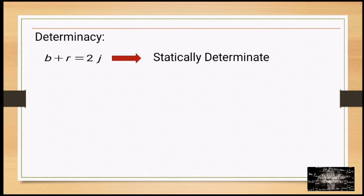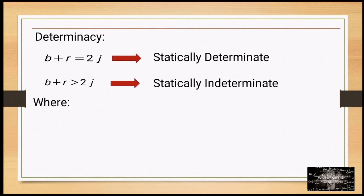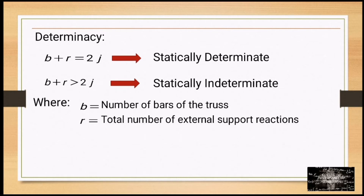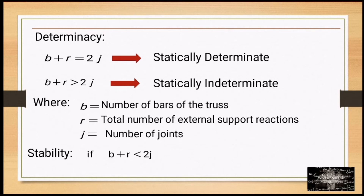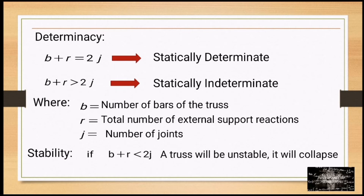The structure is statically determinate when b plus r equals 2j, where b is the number of bars of the truss, r is the total number of external support reactions, and j is the number of joints. For stability, if b plus r is less than 2j, the truss will be unstable or it will collapse.